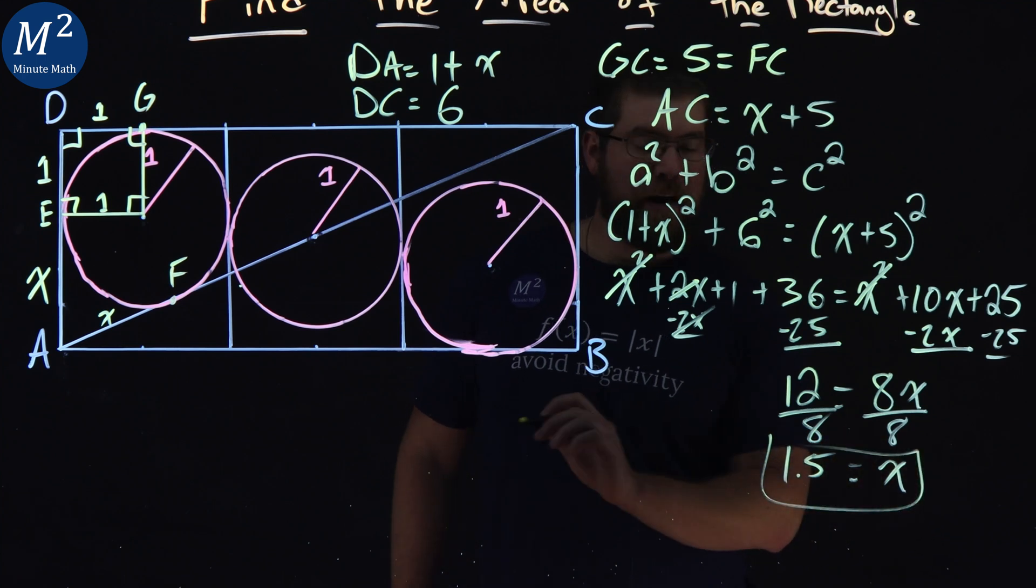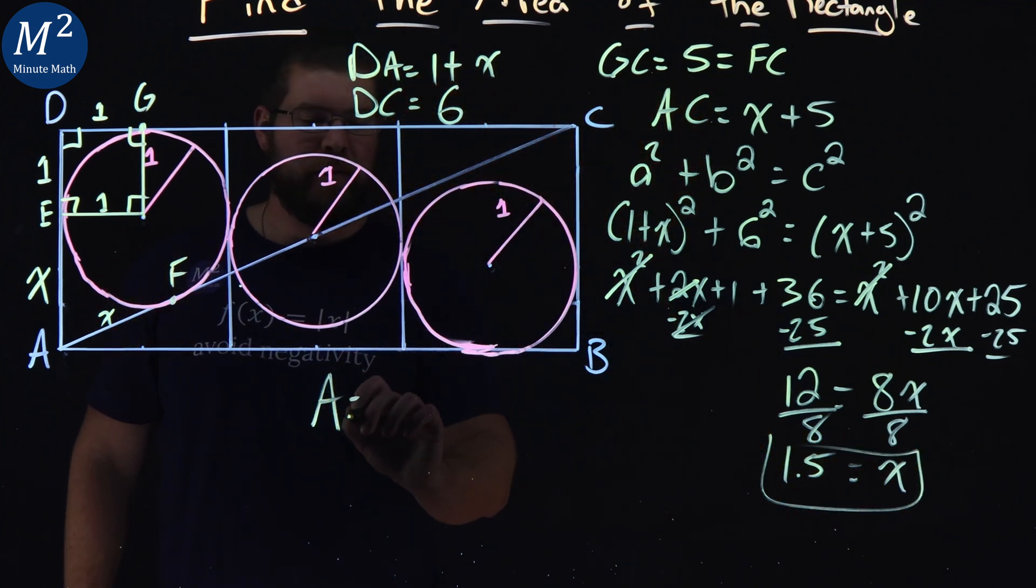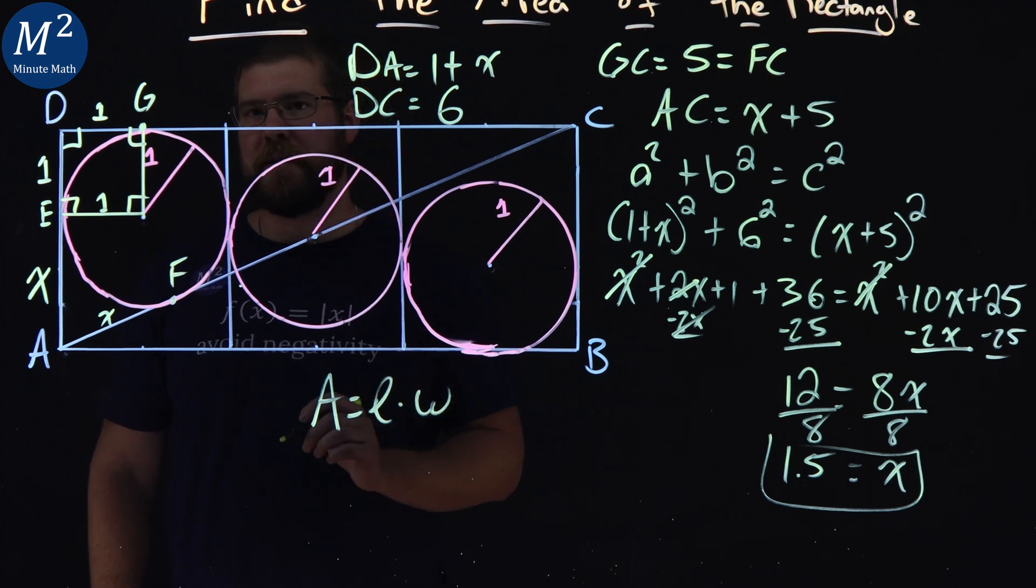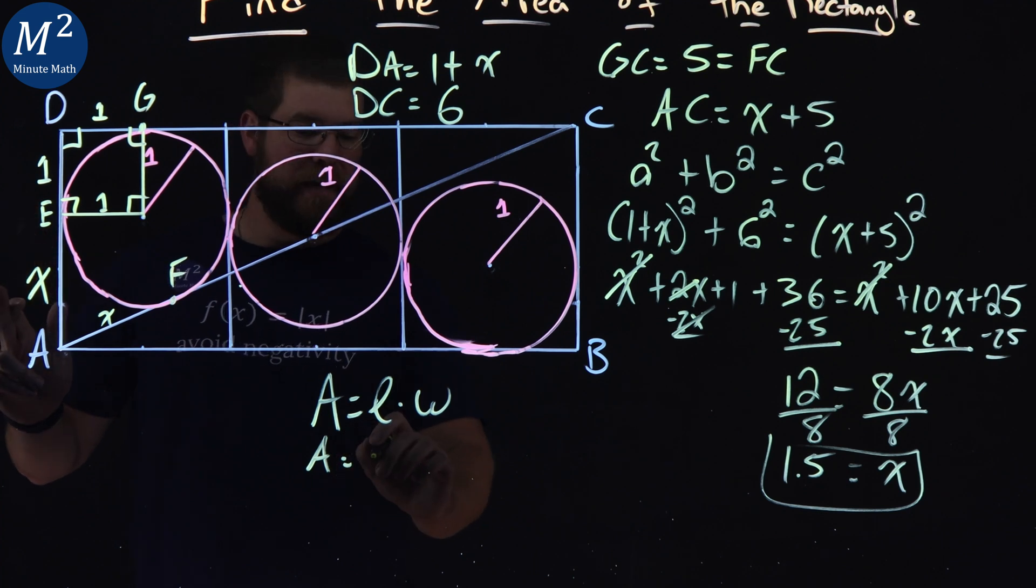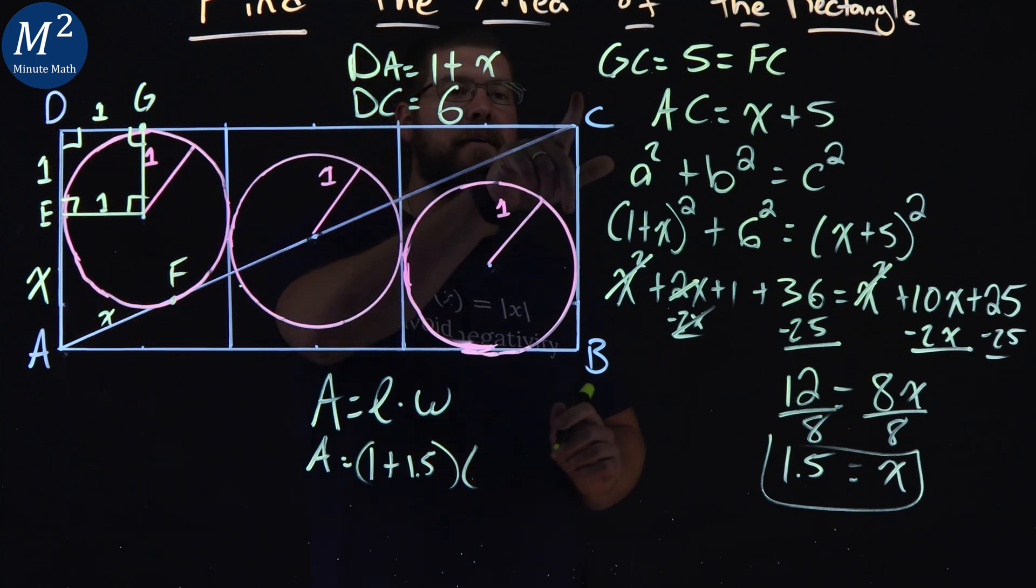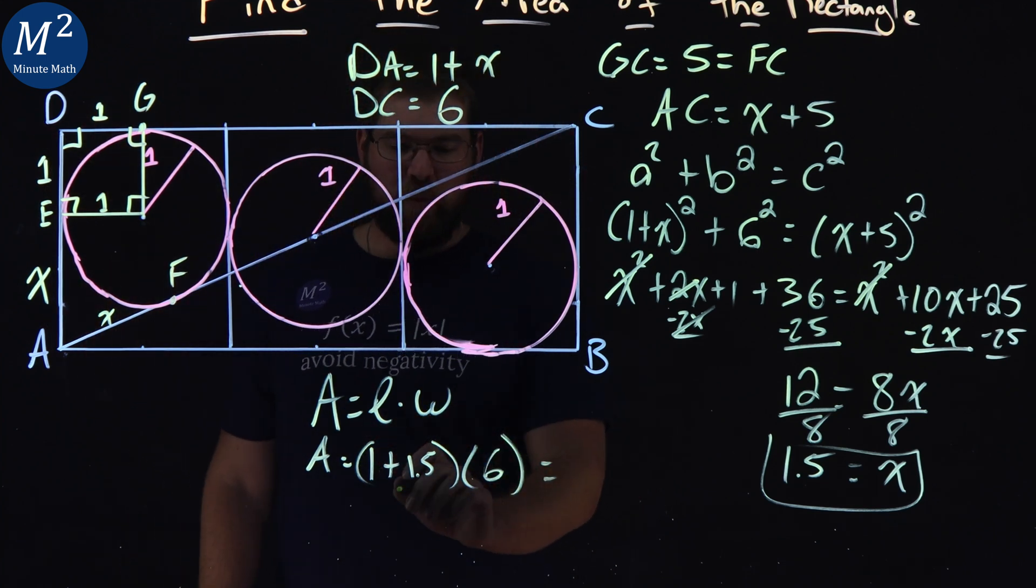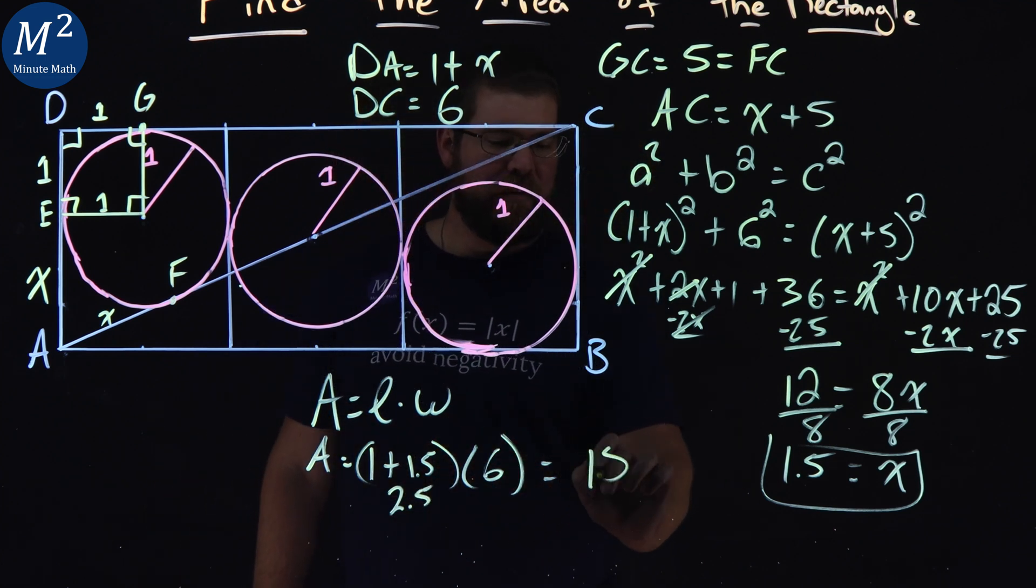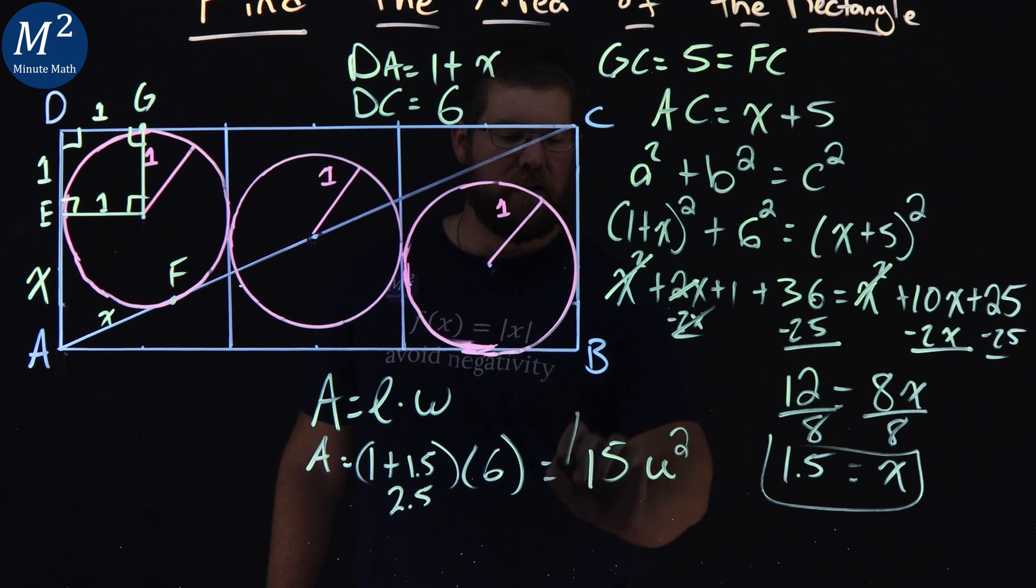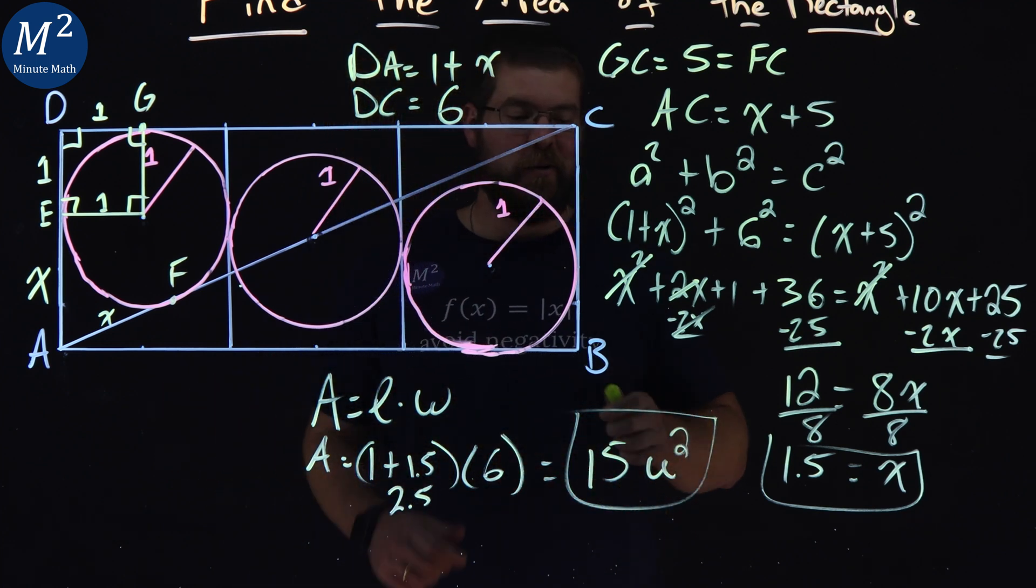So if X is 1.5, we can find the area of the rectangle. Remember, area equals length times width of a rectangle. Our length, let's call it 1 plus X, so 1 plus 1.5 times our width 6. 1 plus 1.5 is 2.5, multiply that by 6, and we get 15 units squared. And so the area of our rectangle here is 15 units squared.